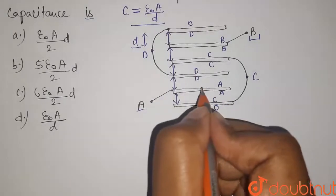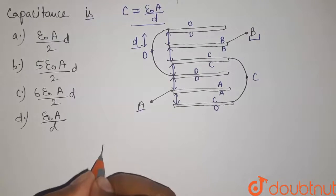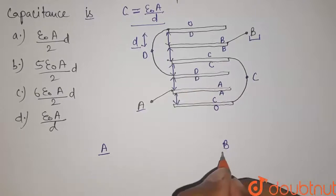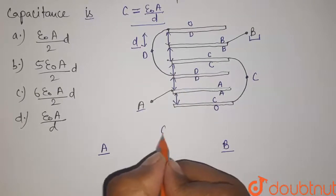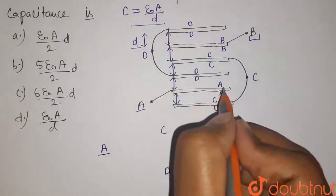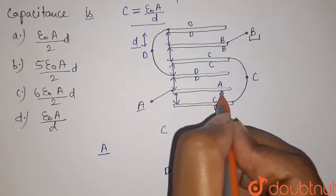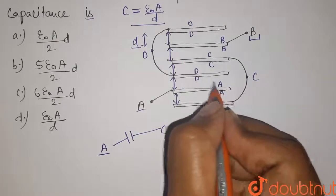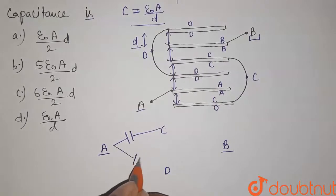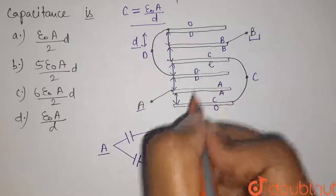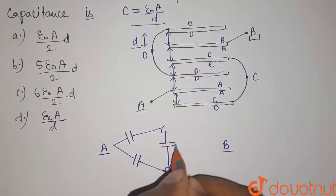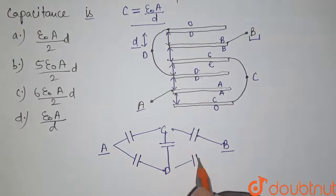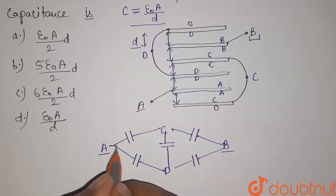Using these potentials we can draw a circuit. We have point A and point B, and we have to find the equivalent capacitance between these two points. The intermediate points are C and D. Between A and C there is one capacitor; between A and D there is one capacitor; between C and D there is one capacitor; between C and B there is one capacitor; and between B and D there is also one capacitor. So the equivalent circuit looks like this.